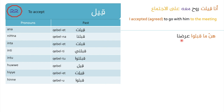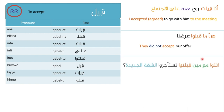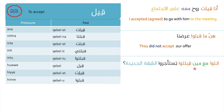Second example: 'Enna iblit' — they didn't accept our offer. Third example: 'Entu ma'amien iblitu testa'ajruu il-shiqq al-jdeide' — did you agree to rent the new flat? 'Testa'ajruu' means to rent, 'il-shiqq al-jdeide' means the new flat.